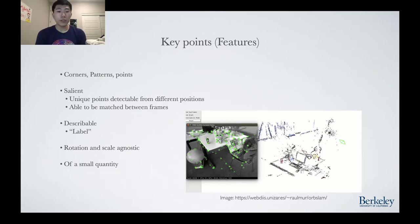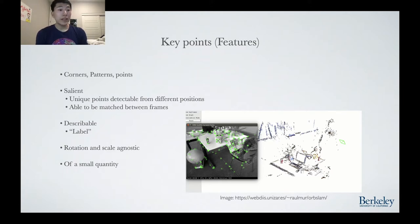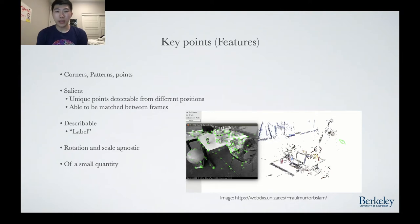Key points, or features in the case of SLAM, are specific points in an image that satisfy key conditions, allowing them to be used for SLAM. They are usually corners or pieces of patterns that can be identified and tracked with ease. They need to be salient, meaning they are unique points detectable from different positions and different image frames, and able to be matched between frames. If I take an image of a building from one angle and then reposition and take an image from a different angle, I should be able to find key point pairs between the two frames.